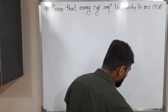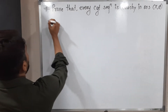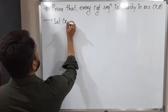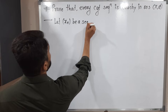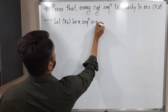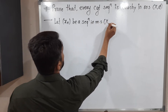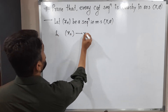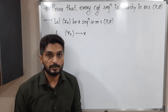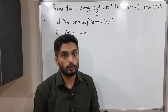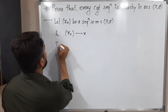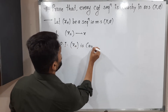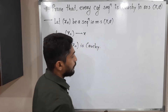Let xn be a sequence in metric space (X, d). The sequence converges to x, so we have a convergent sequence. Now we have to prove that it is a Cauchy sequence.